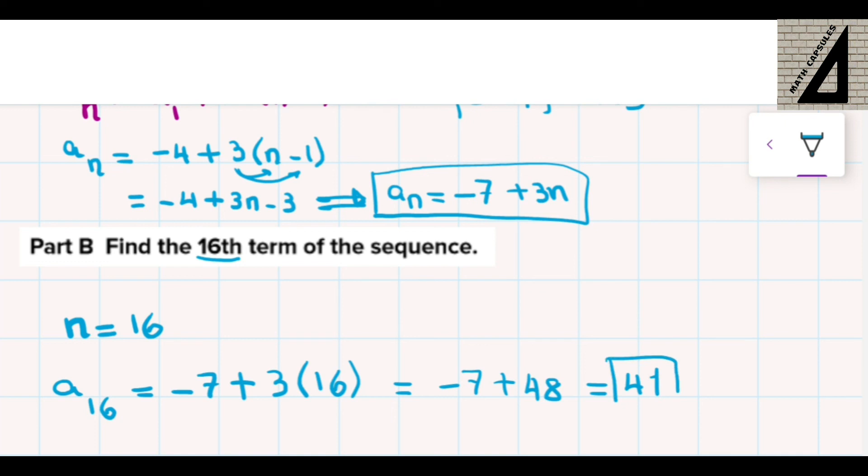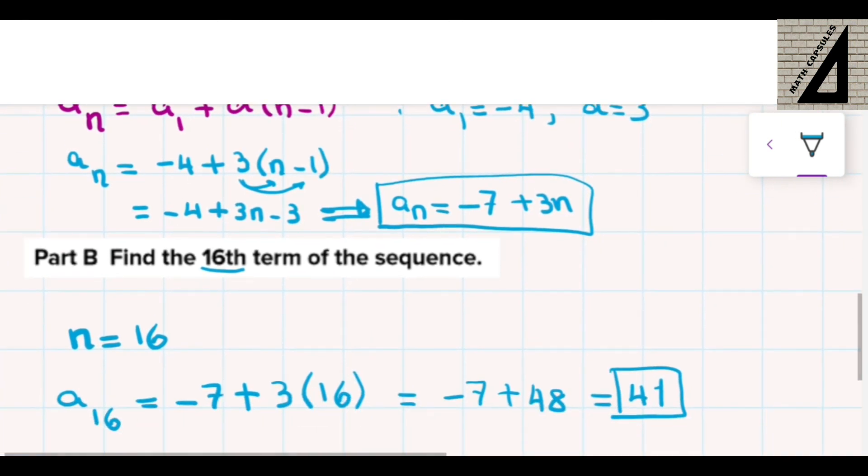So this means that the 16th term in this arithmetic sequence is 41. And of course, this is the use of the explicit formula to find out any term without having to write out or calculate all the previous terms.